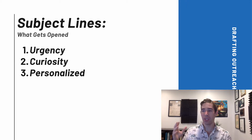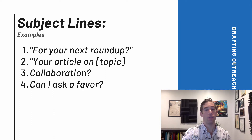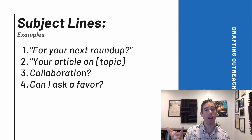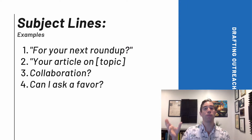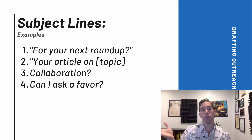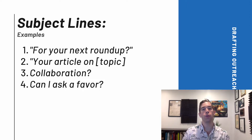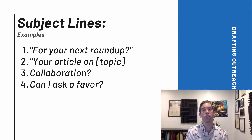Here are some suggestions for email subject lines. The first one is 'For your next roundup post?' — this shows curiosity. It's intriguing and hints at something related to what they're familiar with. For link roundup outreach in particular, this works very well. As mentioned in our video on link roundups, the people you're reaching out to will want good content, so you're doing them a huge favor. That's not necessarily the case with other types of outreach where they're not expecting you to reach out.